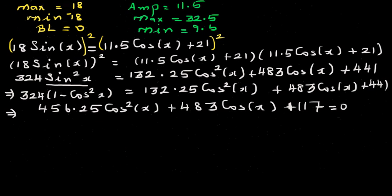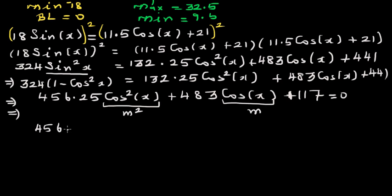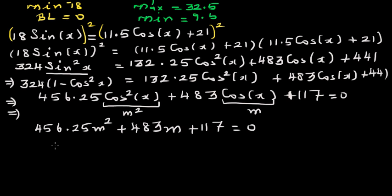This is now a quadratic equation. Let m = cos x, so we have 456.25 m² + 483 m + 117 = 0. Using the quadratic formula — or a calculator's polynomial/equation solver for second degree — gives two values, rounded to 4 decimal places: m = −0.3752 and m = −0.6833.